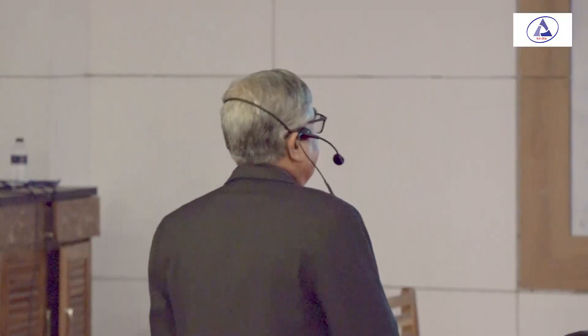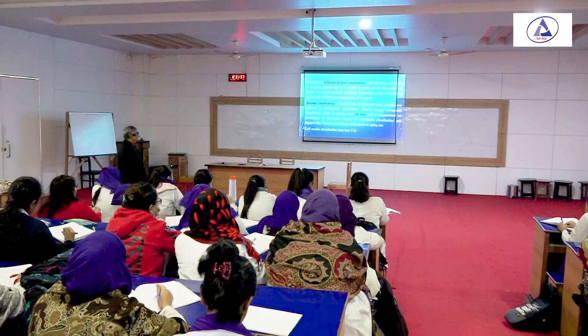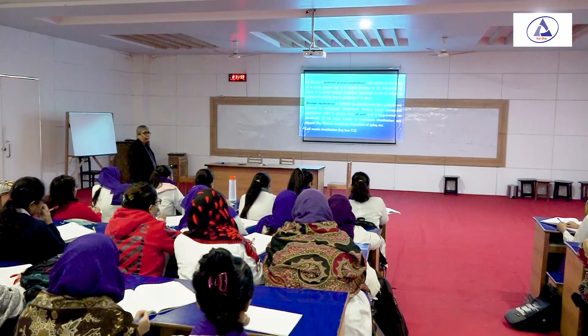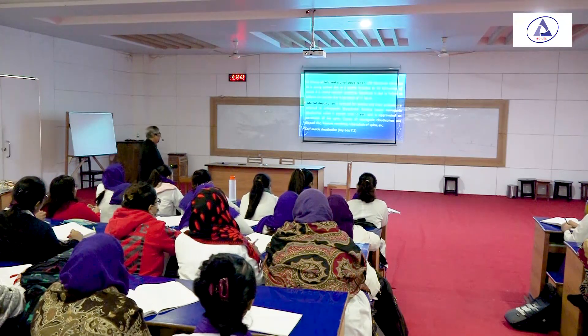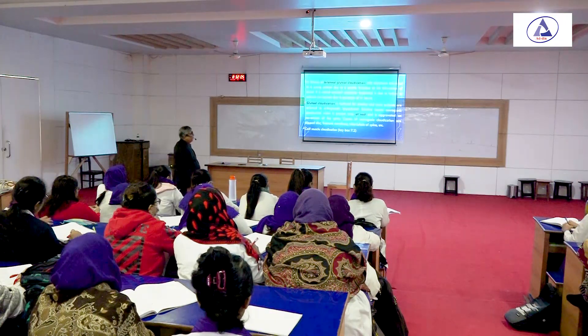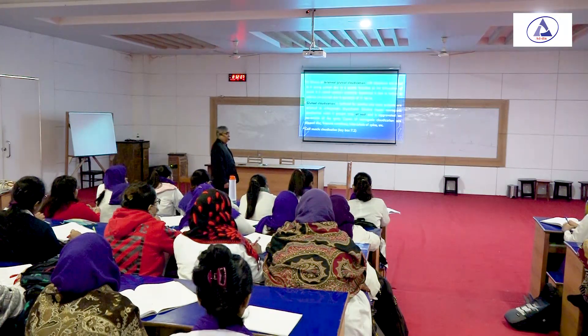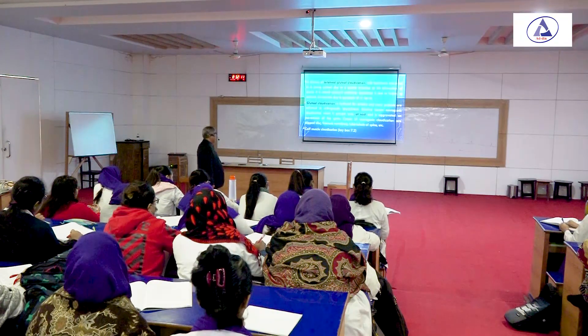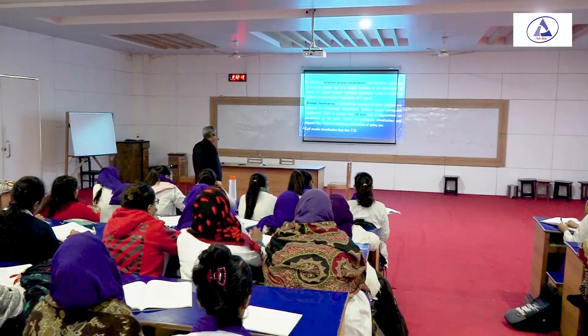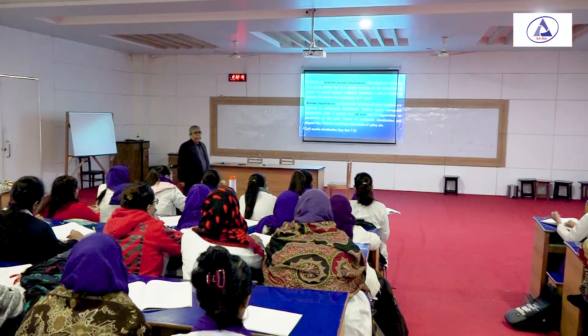Gluteal claudication can be bilateral or unilateral, and is confused with sciatica. Sciatica is neurogenic pain arising from compression of the sciatic nerve and its roots or branches. The causes include intravertebral disc slipping, vertebral fracture, and tuberculosis of the spine.